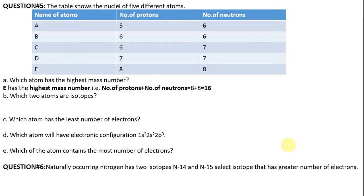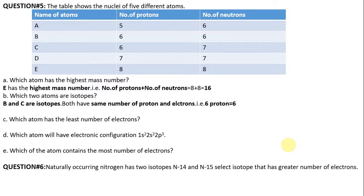Which two atoms are isotopes? Isotopes have the same number of protons. Looking at the table, atoms B and C have the same number of protons, which is 6, so B and C are isotopes. They have the same number of protons and electrons, that is 6 protons and 6 electrons, but the number of neutrons is different: in B it is 6, and in C it is 7.